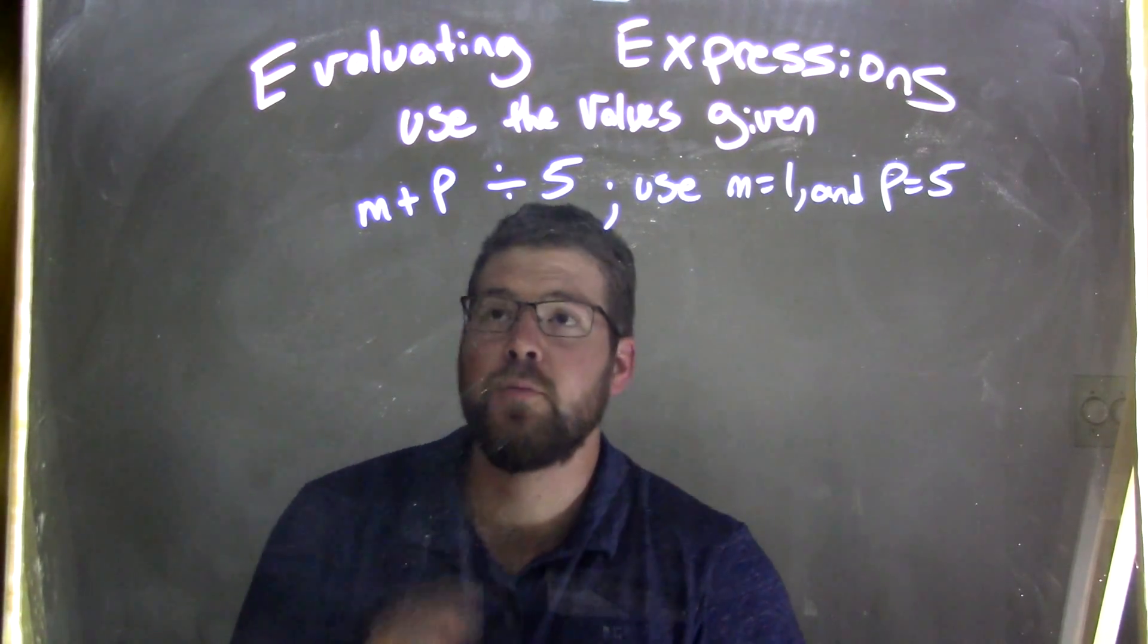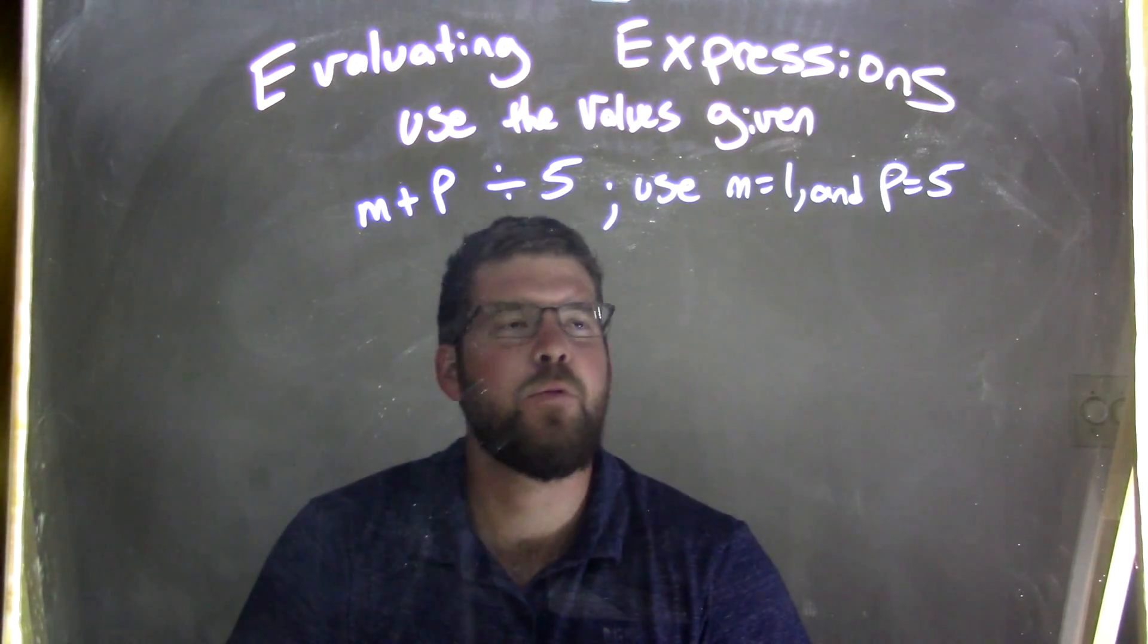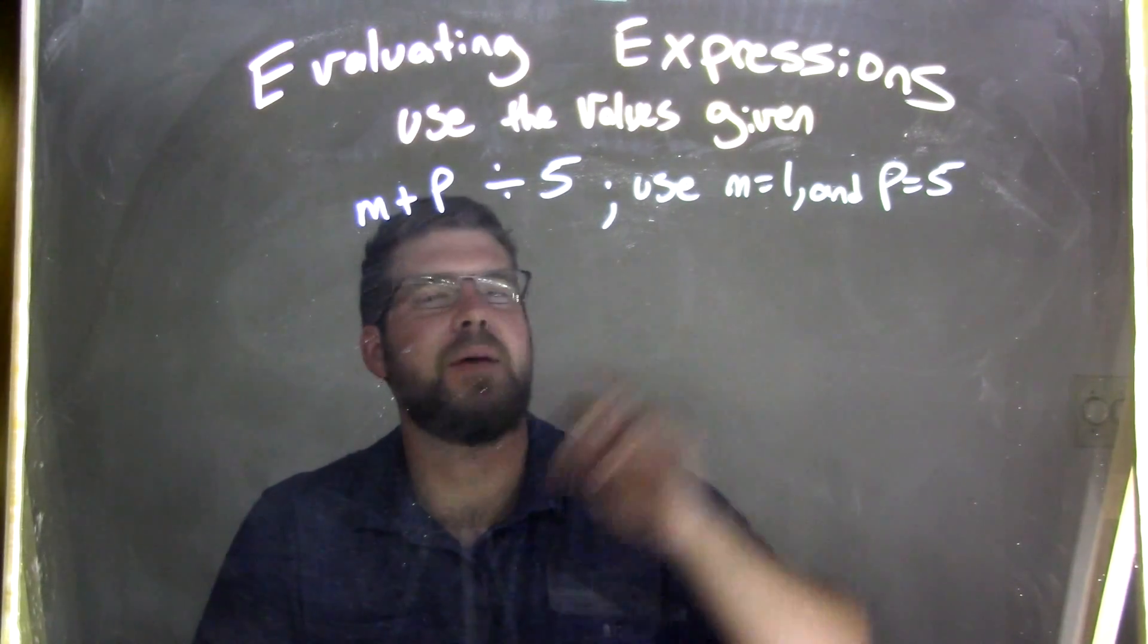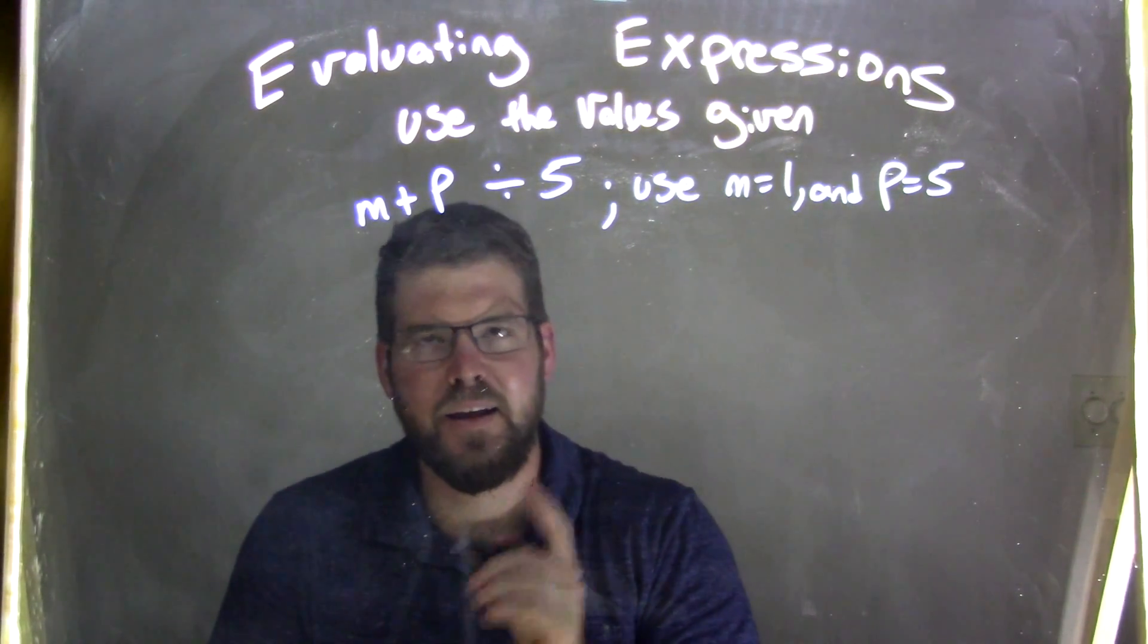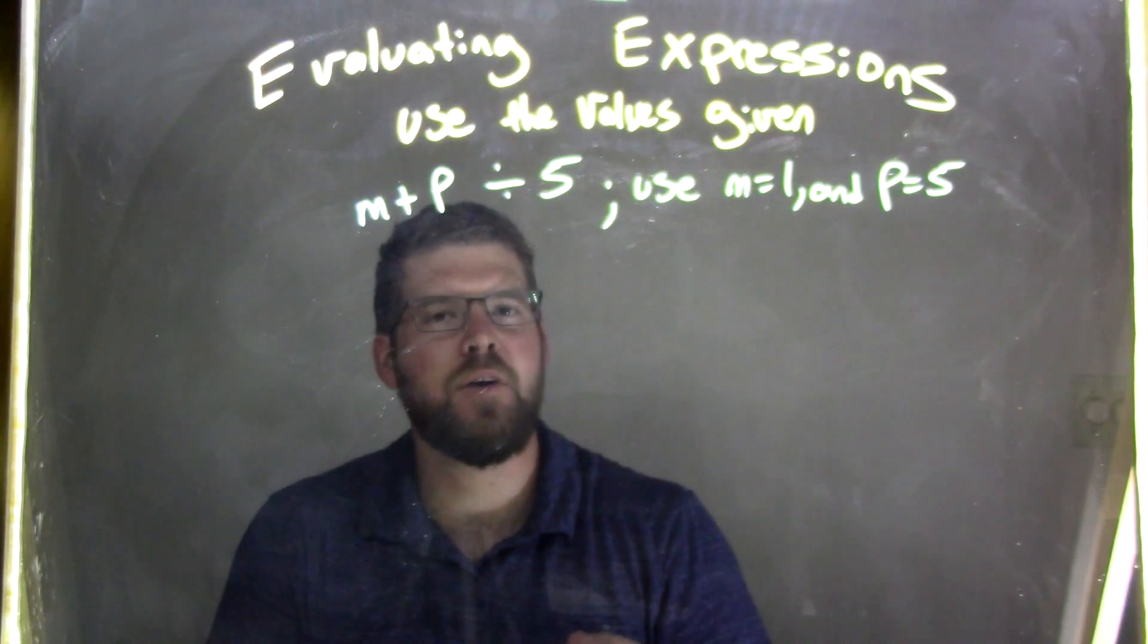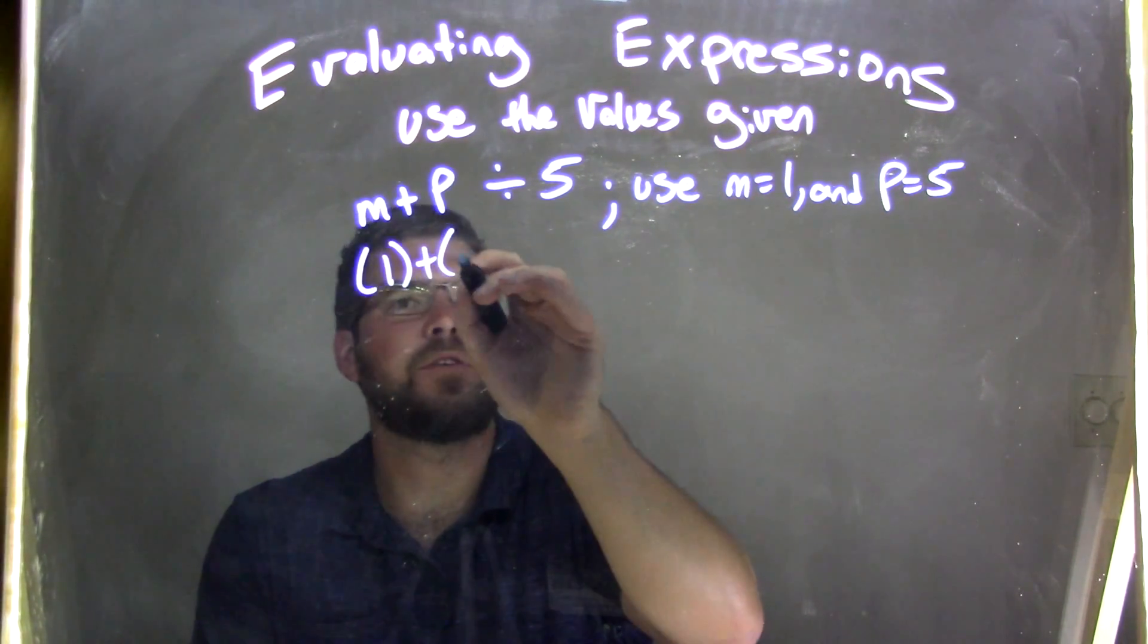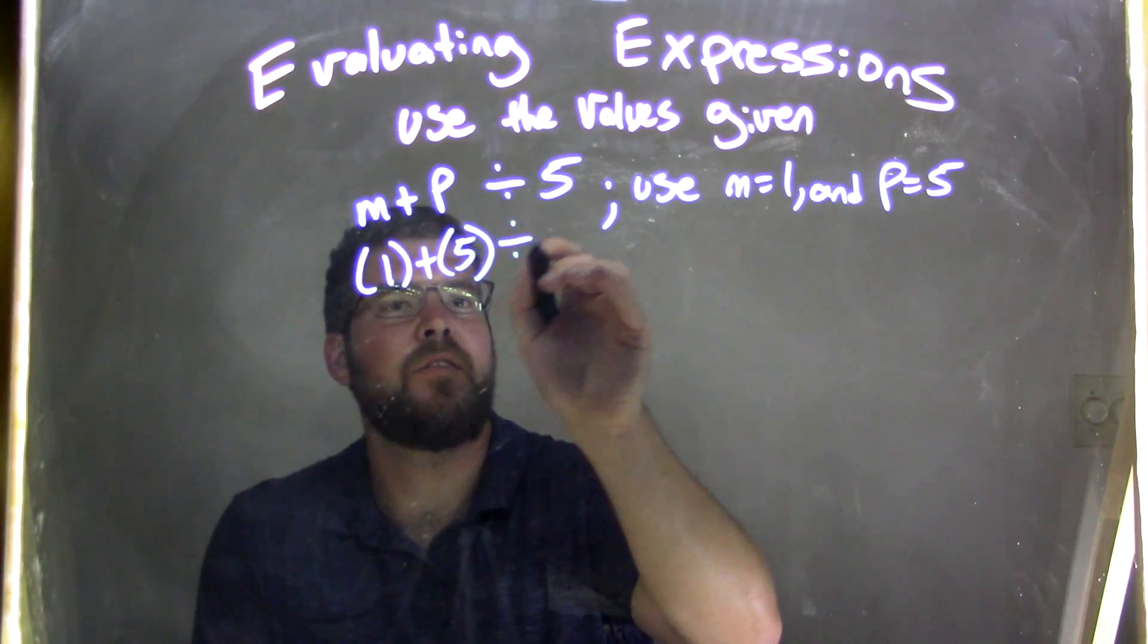So if I want to evaluate that expression, m plus p divided by 5, I'm going to substitute first, m to be 1 and p is 5. Make sure to put parentheses around what you're substituting in. 1 plus p, which is 5, divided by 5.